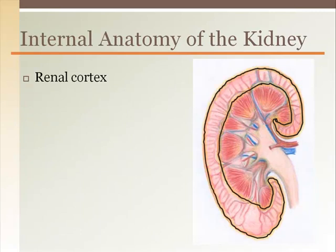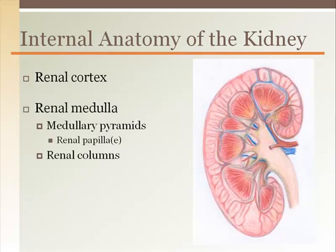The internal structures of the kidney begin with the outer layer called the renal cortex, where the blood is separated and solutes first enter the tubules. The next layer is the renal medulla, which is distinctive because of the medullary or renal pyramids. The medullary pyramids are dark red and have a line texture like corduroy. Between the medullary pyramids is tissue that appears similar to the cortex; these regions are the renal columns.